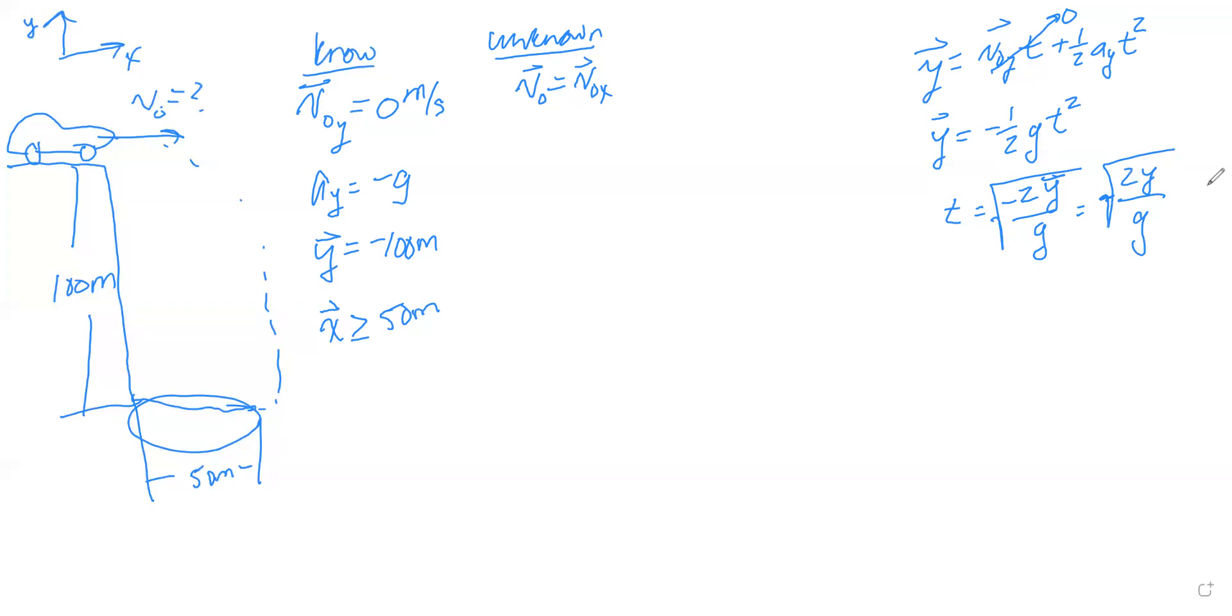In the x direction we know that x equals v_initial_x times t, and so we can substitute this in for t. First we're looking for v_initial_x, so we can solve for v_initial, we get x over t equals v_initial_x. Now we can plug in for t, so we have x times the square root - dividing by a fraction is the same as multiplying by the reciprocal - square root of g over 2y equals v_initial_x.